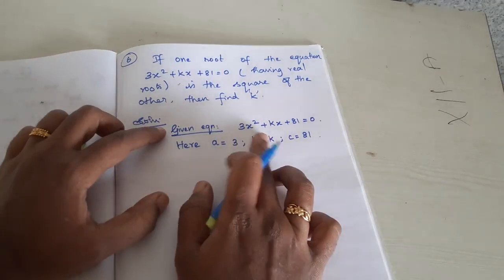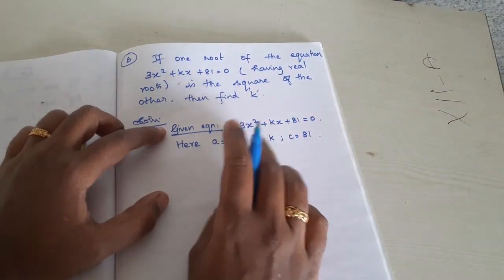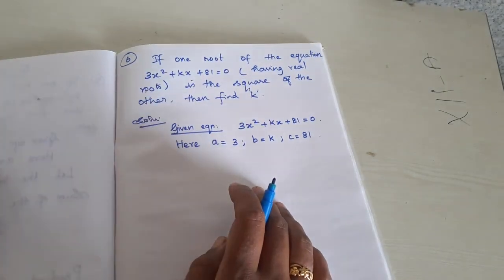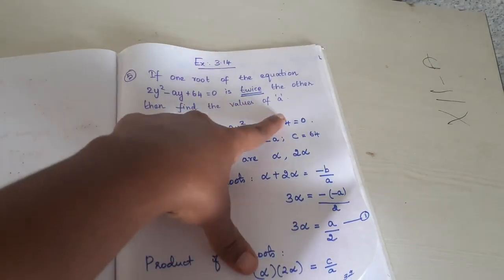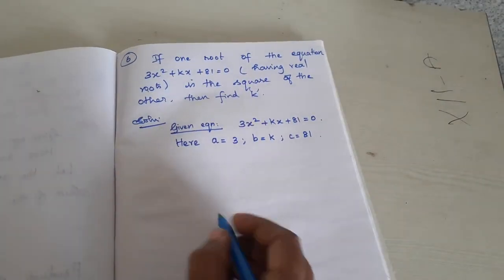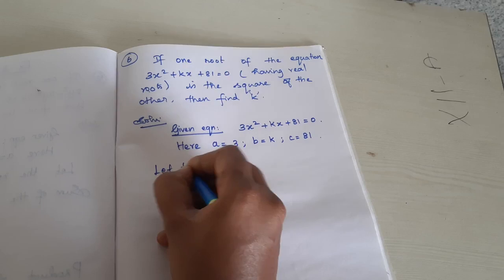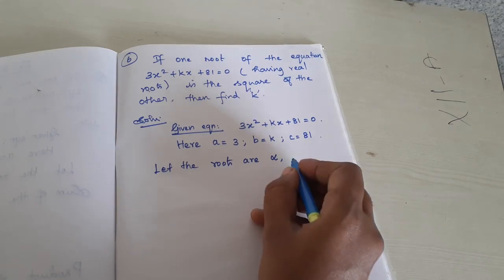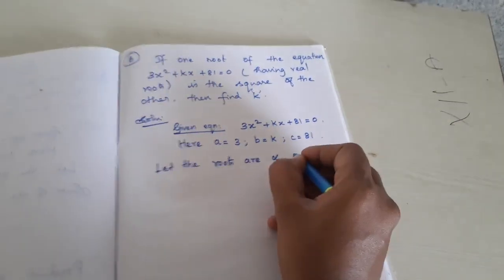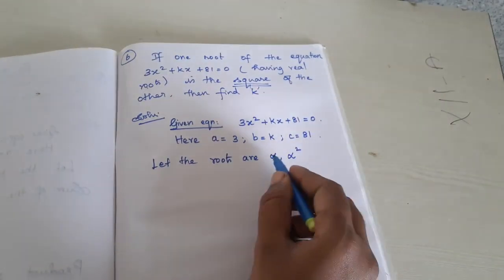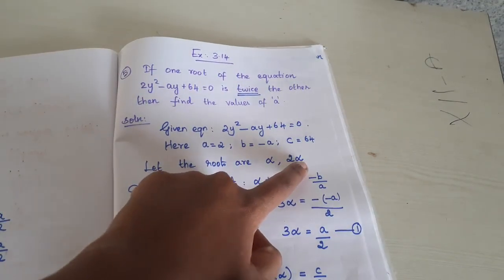The hint given: one root of the equation is the square of the other. A quadratic equation has two roots, alpha and beta. Here, if one root is alpha, the other root is alpha squared — that is the square of the other. Compare with the previous problem where it was twice, so the next root was 2 alpha; here it's square, so the next root is alpha squared.